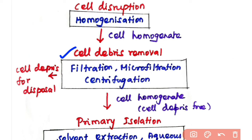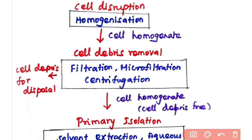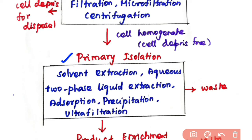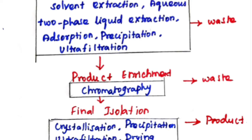The next step is cell debris removal. After disruption, your product is present with cell components, so you must remove the cell debris using filtration, microfiltration, or centrifugation. The cell debris is disposed of and you collect the cell homogenate, which contains your product. Primary isolation then removes impurities with properties different from your product using techniques such as solvent extraction, aqueous two-phase liquid extraction, adsorption, precipitation, and ultrafiltration. Method selection depends on the physical and chemical properties of your product. In product enrichment, chromatographic techniques are used to purify the product.